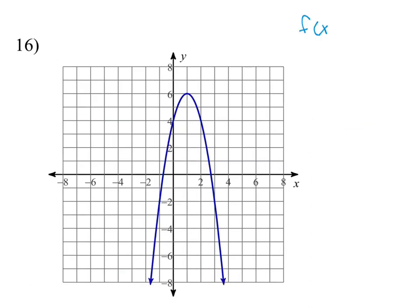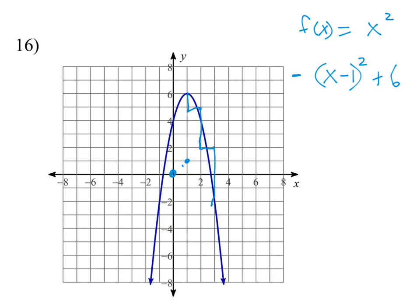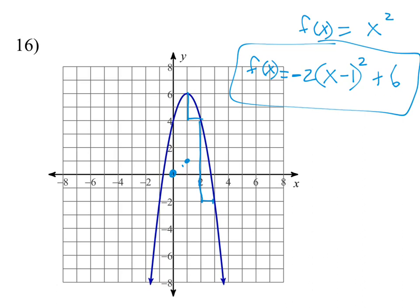Number 16 is quadratic, so the basic form is f(x) = x squared. The vertex moved from 0,0 to 1,6 — to go right 1 you write x minus 1 in parentheses squared, and to go up 6 you add plus 6. Then look at the slopes: normally they go up 1, up 3, up 5, up 7. But this one is upside down, so we put a negative in front. It's also going twice as fast — down 2, then down 6 — so we put a 2 in front. Our function is f(x) = -2(x - 1)² + 6.